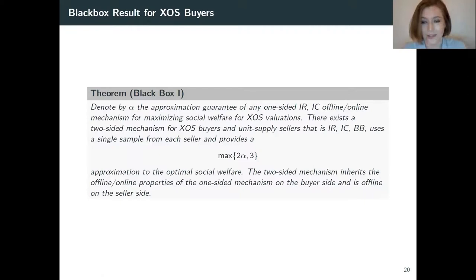So we showed the following. If you have a one-sided mechanism that works for the setting where buyers are from the class XOS and has the according nice properties that we had during the whole talk, then you can take this one-sided mechanism and adjust it to work actually also in our two-sided settings. However, you lose a small constant factor, which is essentially just the 2-factor that we had in the first part of the talk. Here it doesn't even matter if the one-sided mechanism is online or offline on the buyer's side. Both works pretty fine.